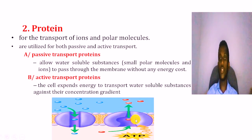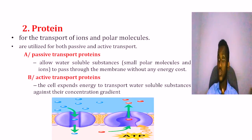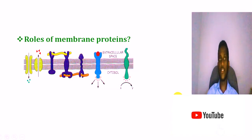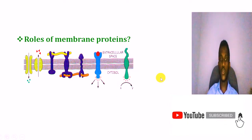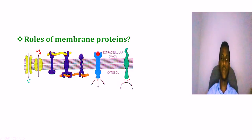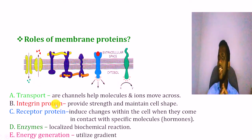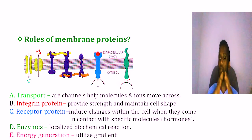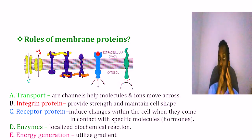The protein important in active transport moves molecules against the concentration gradient. Active transport requires energy to move molecules. We also have integrin protein, which is important for the membrane structure — it helps maintain the membrane and provides strength.